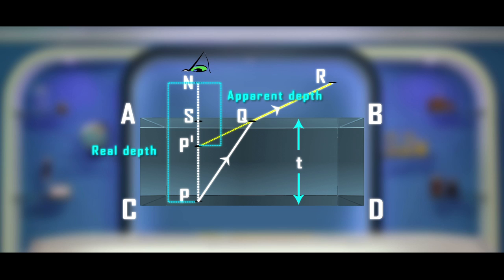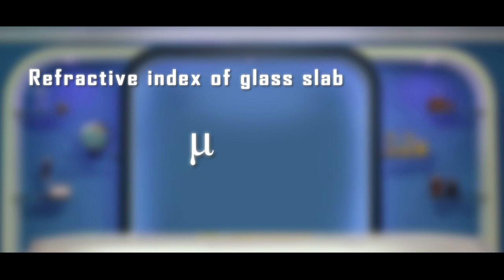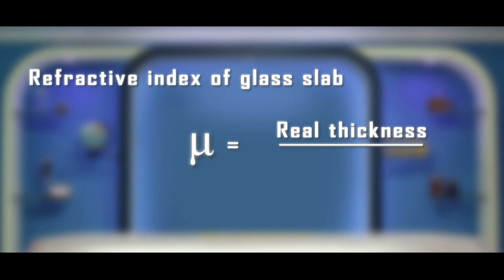Using the concept of real depth and apparent depth, refractive index of the glass slab mu is equal to real thickness by apparent thickness.